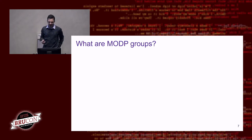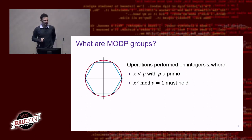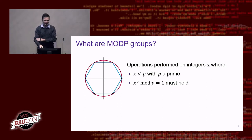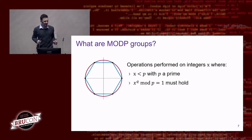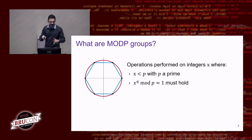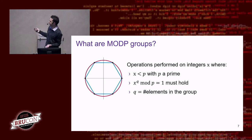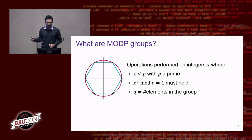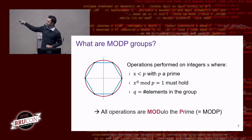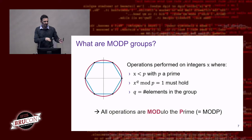For modP groups: all crypto operations are done on numbers, and all these numbers are smaller than a certain prime P — that's the key thing to remember. The numbers also need to satisfy a certain equation, but understanding that isn't critical. Q represents the number of elements in the group. All operations are done modulo the prime — that's why it's called modP groups.